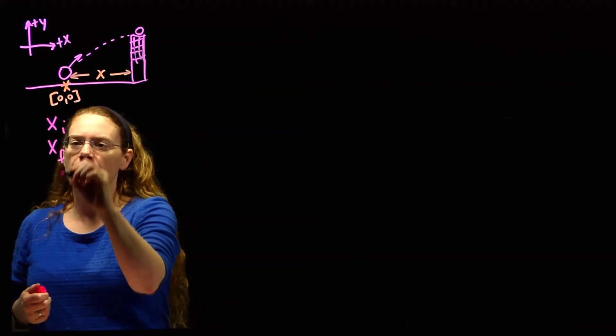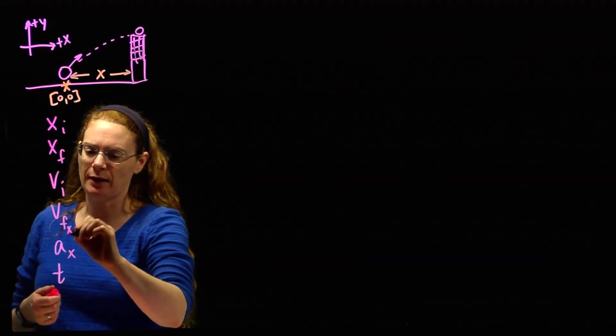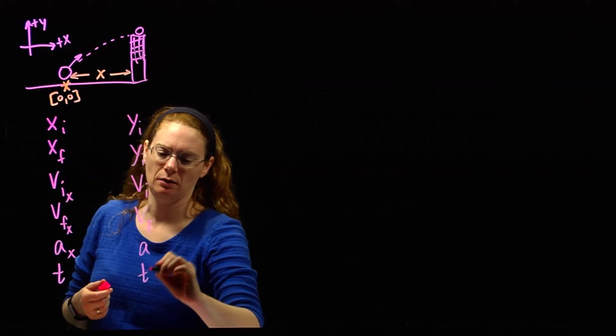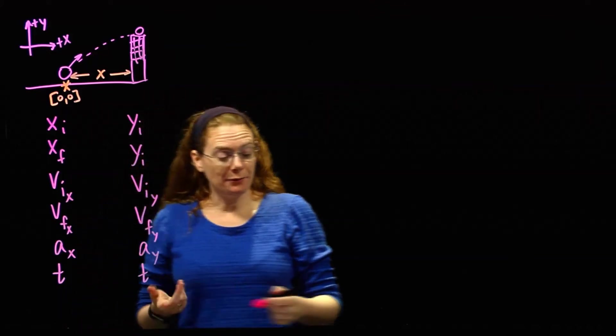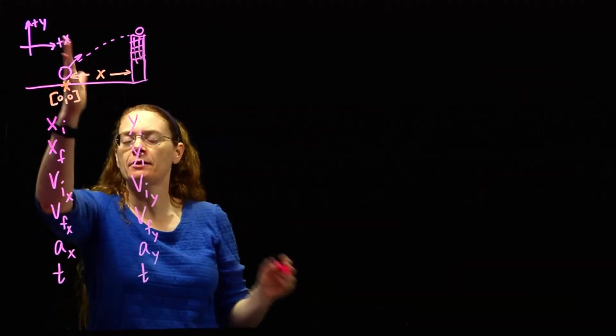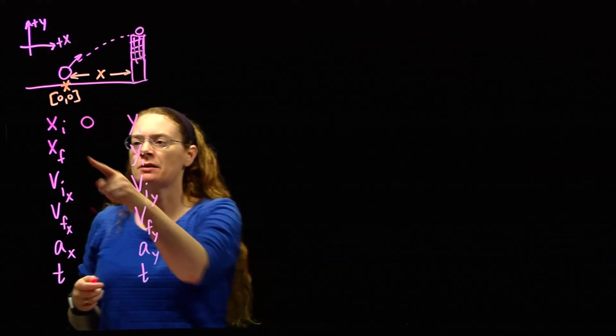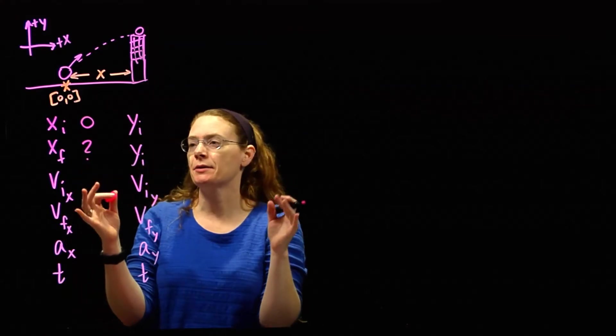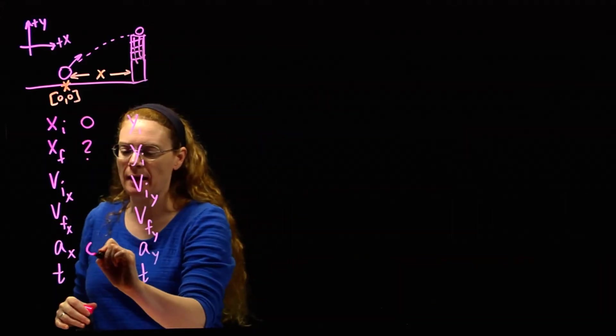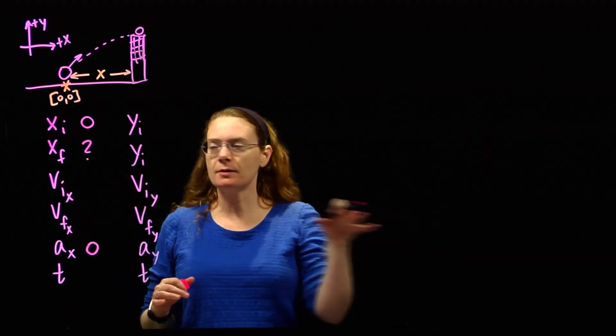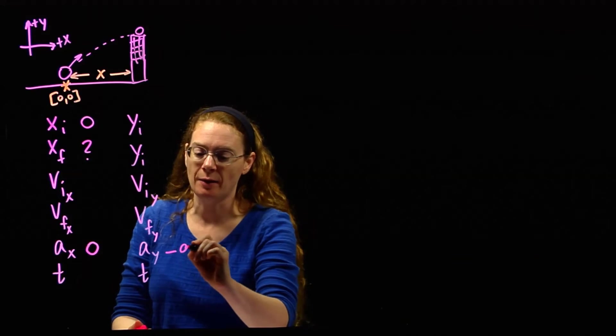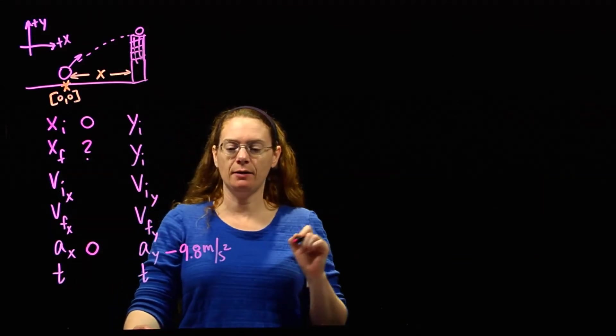We've got our six variables horizontally: x initial, x final, v initial x, v final x, ax, t. And then the same six variables vertically. Now let's fill them in. Horizontally first, we start horizontally at 0. x final, that's the net, that's really what I'm looking for. v initial x, I don't know. v final x, I don't know. Ax, I do know. You always know ax and ay for projectile motion because there's nothing speeding it up or slowing it down horizontally. So horizontally, no acceleration. Vertically, we know it's acted on by gravity. So ay is negative 9.8 meters per second squared.